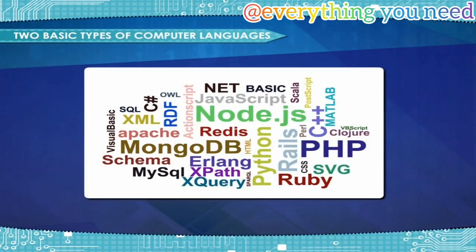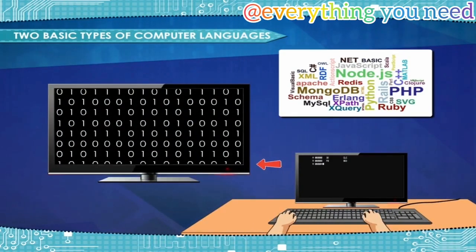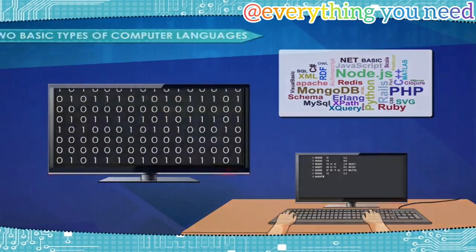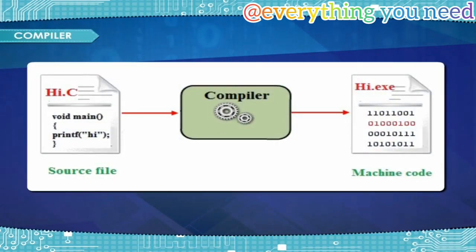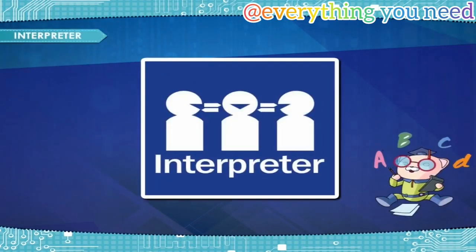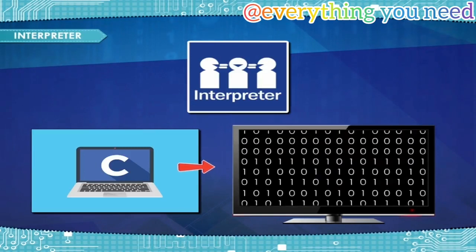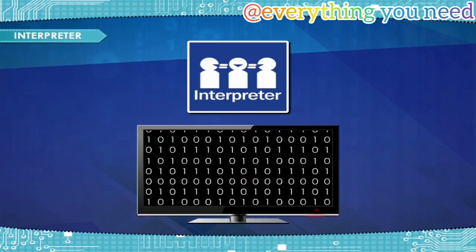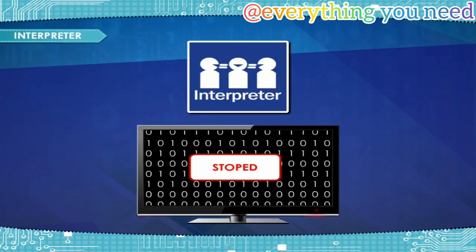High-level languages use a translator program for converting high-level programs into machine language. Compiler and Interpreter are used as translators in HLL. A Compiler is a translator program that converts the whole HLL source program into object code (machine program code) at once, and also generates a list of errors and shows it to the user. An Interpreter is a translator program that converts HLL programs line by line. If there is any error at any point or line, program execution will stop until the error is removed or debugged.